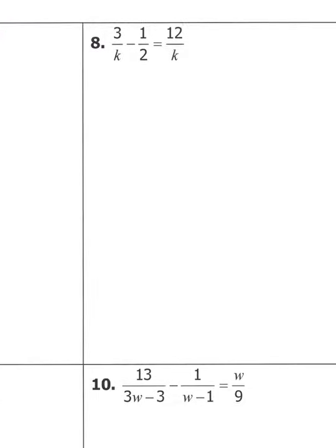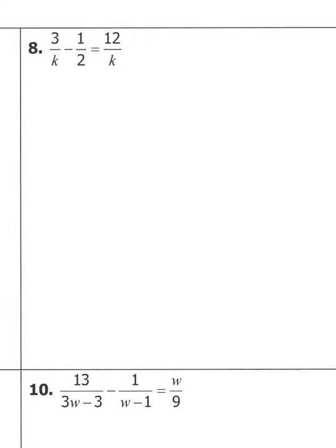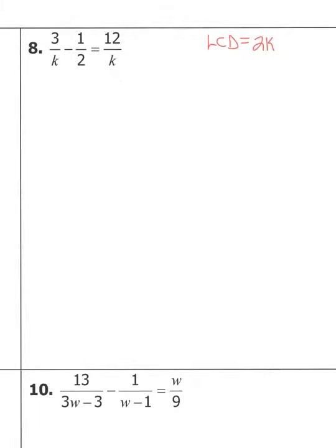Go ahead and do number eight on your own — pause the video and try it. The least common denominator: all denominators here are fully factored, two is prime, and you can't simplify the k's. The different factors are k's and two's. For the most twos in any denominator: one. For k's, they're tied at one k each. So the LCD is 2k.